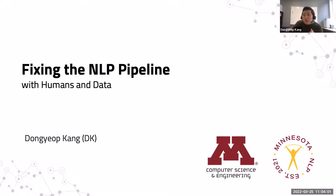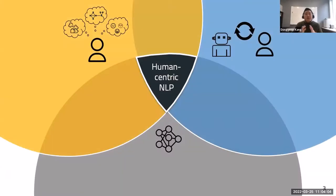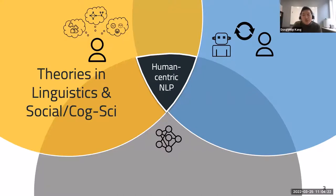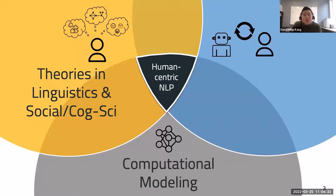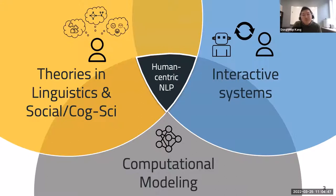Before we start, let me give a summary slide of what kinds of approaches our lab is working on. Our lab aims to build human-centric language technologies. By human-centric, we study theoretical foundations from computational linguistics, social science, and cognitive science. With this interdisciplinary grounding, we develop computational models for NLP tasks, and based on these models we develop practical NLP systems that can interact with real human users — then see what's missing and whether we can improve human activities in the real world.